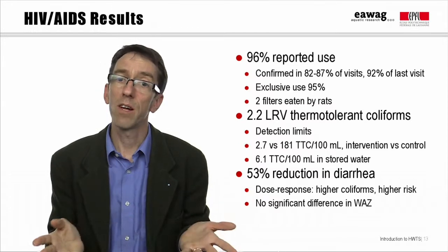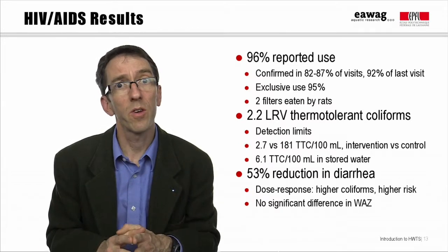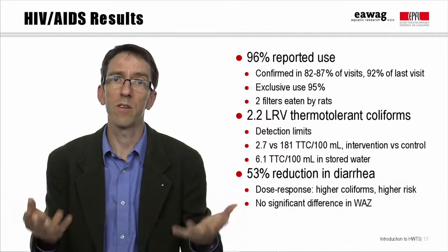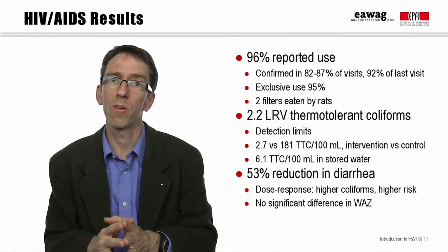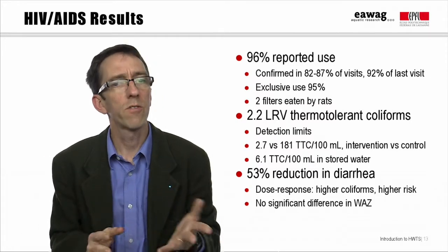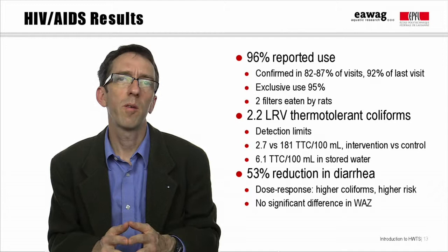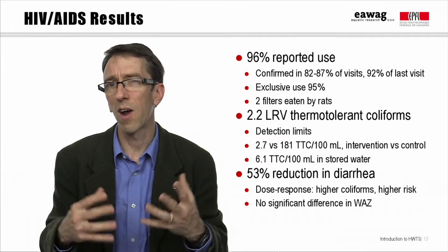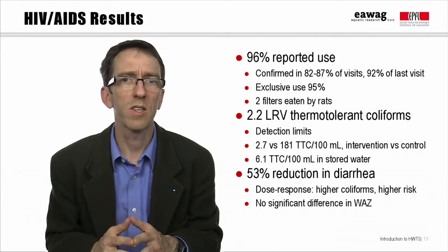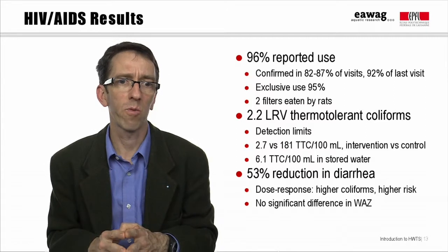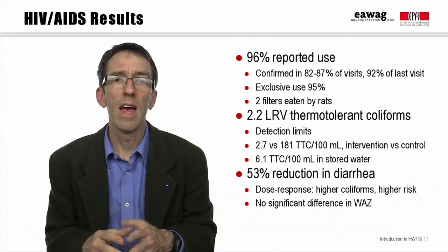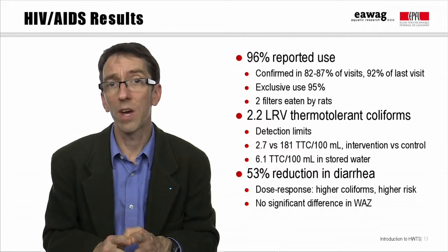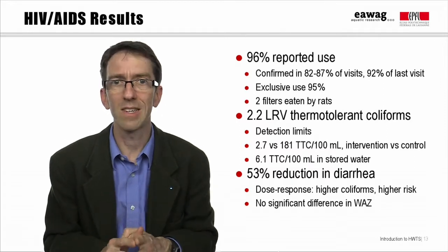The evaluation also found more than a 50% reduction in diarrheal disease, which is high compared to other studies, and found that people consuming more highly contaminated water experienced a higher risk of diarrhea. However, they didn't find any significant difference in the weight-for-age Z-score.